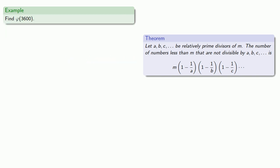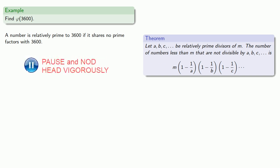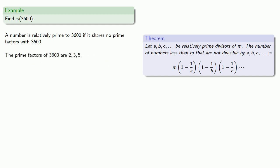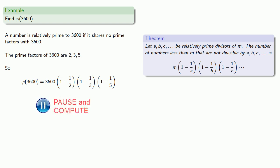Or let's find phi of 3600. Previously we had to factor 3600, and remember, factoring is hard. On the other hand, a number is relatively prime to 3600 if it shares no prime factors with 3600. We note the prime factors of 3600 are 2, 3, and 5. And so we find phi of 3600 equals 3600 times (1 − 1/2) times (1 − 1/3) times (1 − 1/5), which equals 960.